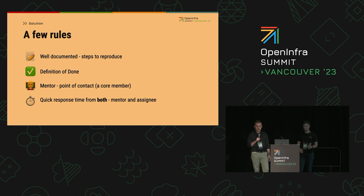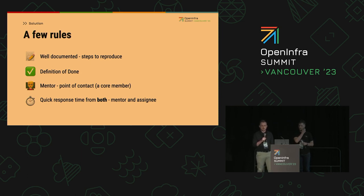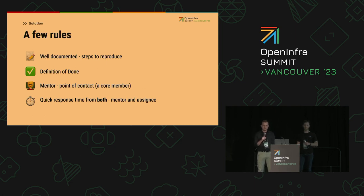The very important last rule is that the response time for both mentors and assignees needs to be really quick. Because one of the obstacles was that people don't have time, so if a mentor is asked a question they should really try to address it as soon as possible. On the other hand, when an assignee is given feedback or a review on their patch, they should address it ASAP as well, because we don't want to waste the mentor's time either.